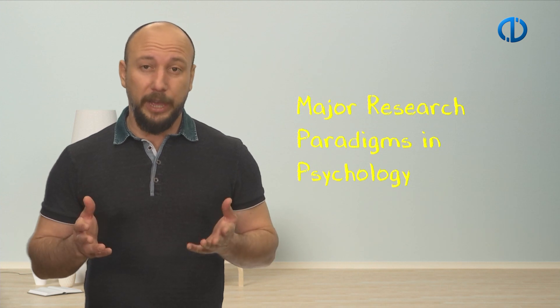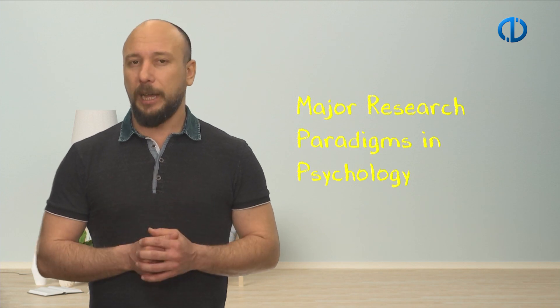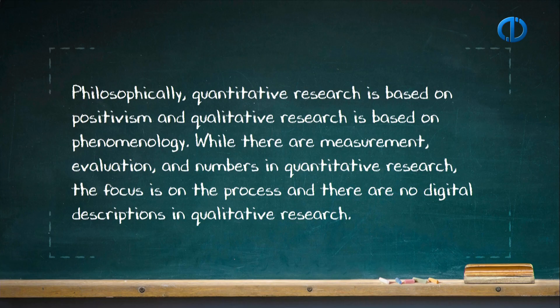There are some major research paradigms in psychology. It can be said that there are two major paradigms in social science studies. Qualitative and quantitative paradigms. In recent years, mixed paradigm studies that contain both qualitative and quantitative factors have also been developed as the third paradigm. Philosophically, quantitative research is based on positivism and qualitative research is based on phenomenology. While there are measurement, evaluation and numbers in quantitative research, the focus is on the process and there are no digital descriptions in qualitative research.